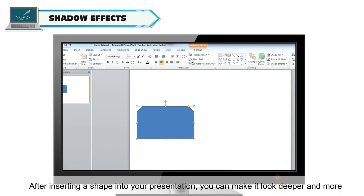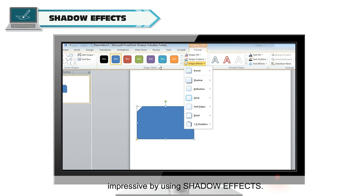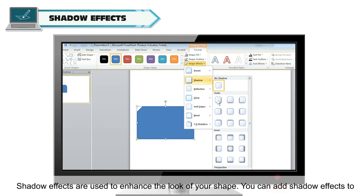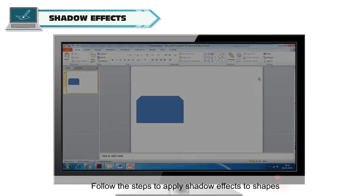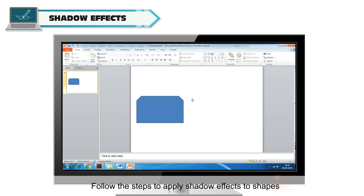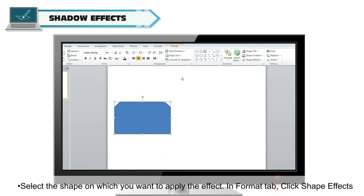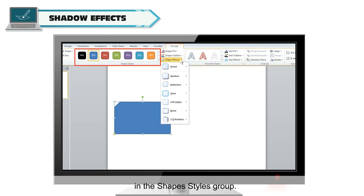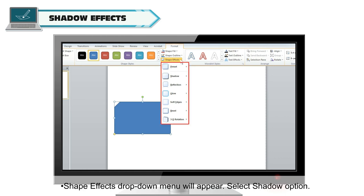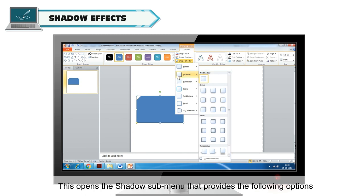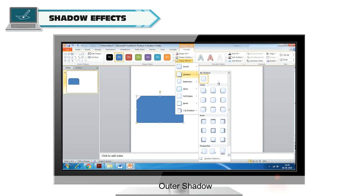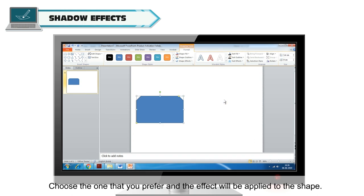After inserting a shape into your presentation, you can make it look deeper and more impressive by using shadow effects. Shadow effects are used to enhance the look of your shape, and you can add them to images, shapes and other objects in MS PowerPoint. To apply shadow effects, select the shape, then in the Format tab, click Shape Effects in the Shape Styles group. The Shape Effects drop-down menu will appear. Select the Shadow option, which opens a sub-menu providing the following options: No Shadow, Outer Shadow, Inner Shadow, and Perspective. Choose the one you prefer and the effect will be applied to the shape.